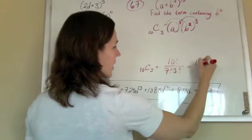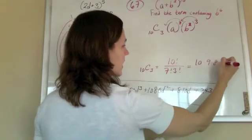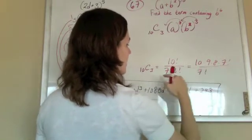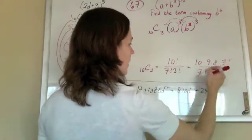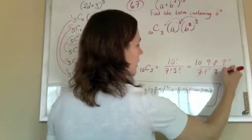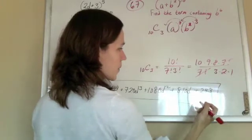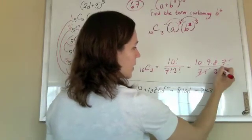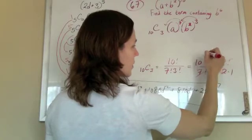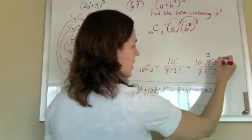Start to write this guy out, and I have 10 times 9 times 8, and I notice the 7 factorial will cancel out with the 7 factorial down there. But I still have a 3 factorial, 3 times 2 times 1. Everything on the bottom will end up canceling. 3 divided by 3 divided by 2.